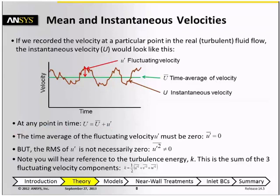By definition, if we take the time average of the fluctuating velocity, then that's going to be equal to zero. But it's important to note that the root mean squared value of the fluctuations, in other words, the time average of the square of the fluctuations, is not equal to zero. This is important because it's the squares of the fluctuations which produce the turbulent kinetic energy.